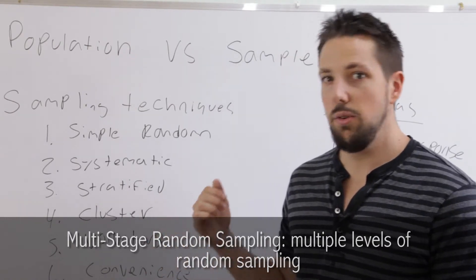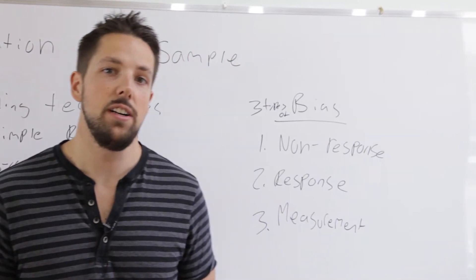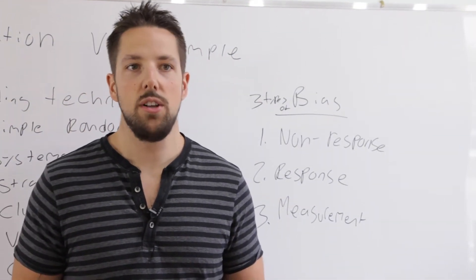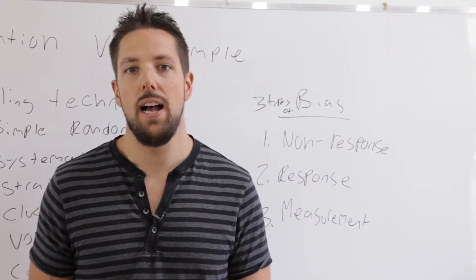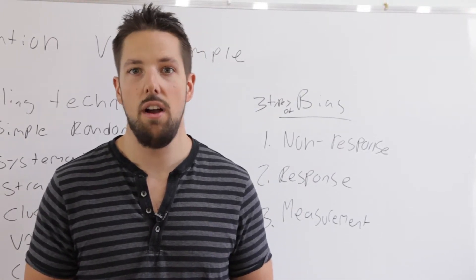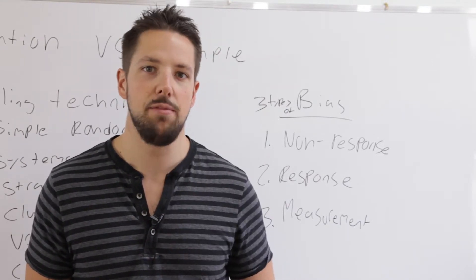The next thing we're going to do is talk about bias. Bias means unfairness or when the results are not actually accurate. Specifically when we're talking about samples, bias is when your sample is not representative of the population. There are three types of bias that can occur.